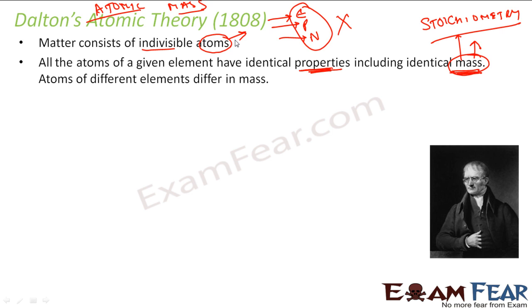So if you see here, what Dalton told in 1808 was that matter consists of indivisible atoms, and these atoms have identical properties including mass - identical chemical properties and the mass. If you take any example, if you take iron, all the atoms in the iron will have similar properties and similar mass. If you take gold, all the atoms in the gold will have similar property and similar mass. This is what Dalton proposed in 1808.